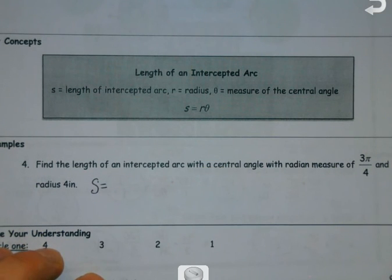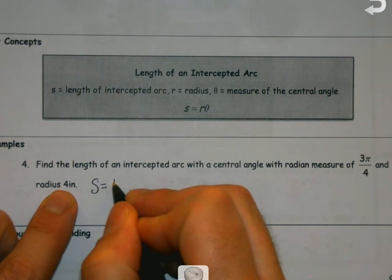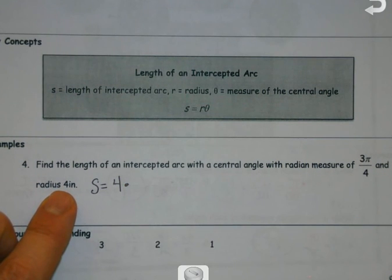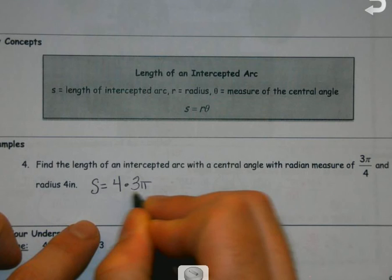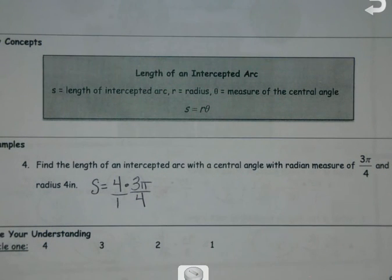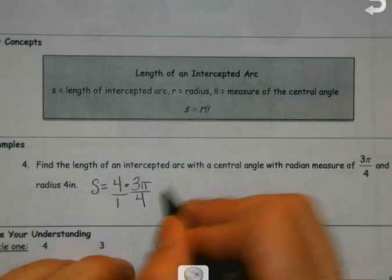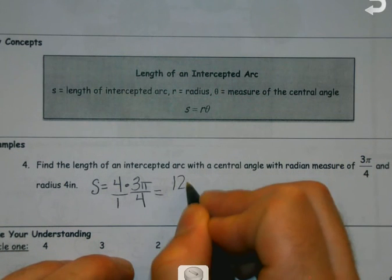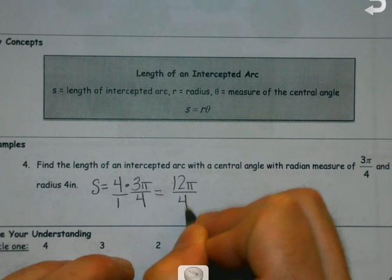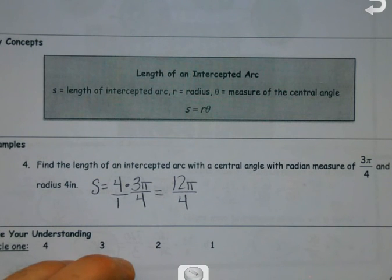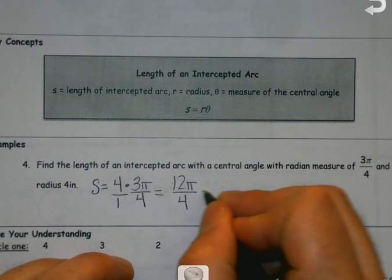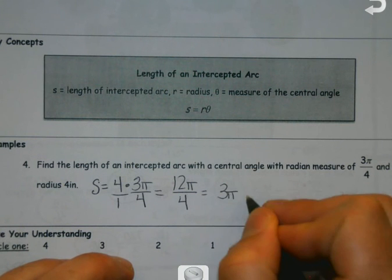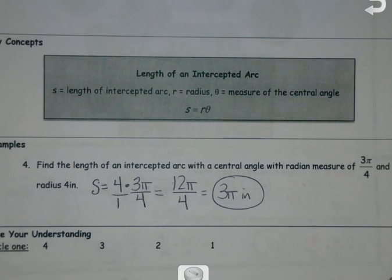So here, my radius is 4, and then the measure of my central angle is 3π over 4, and I can just make fractions out of everything if I want to. I multiply across, and I just reduce the numeric part of the fraction. I leave the π alone. And it's not area, so I don't want to put square inches. I just want to put inches. Now, I want to make note of one thing before we jump into the actual work that could go along with this.